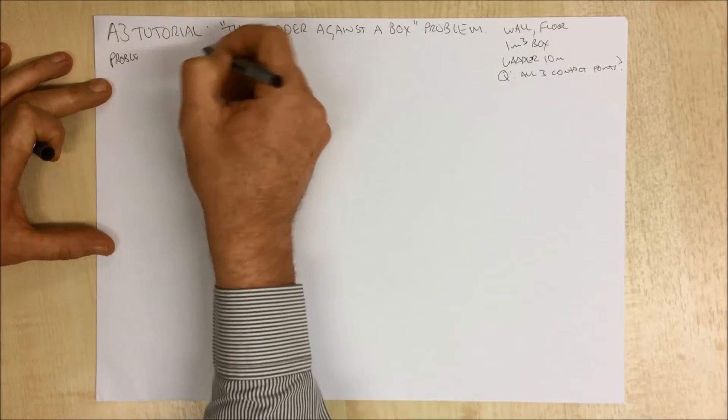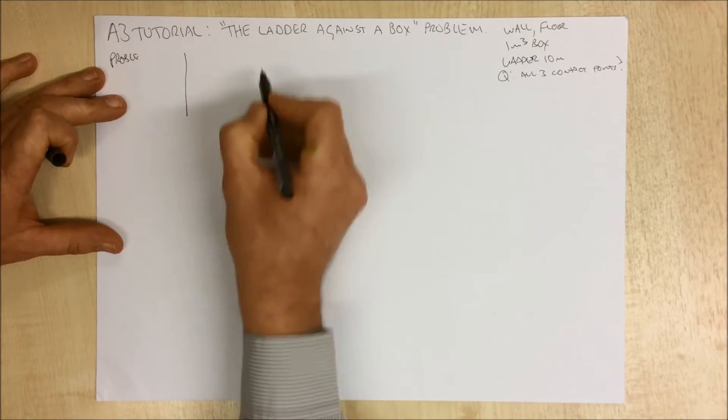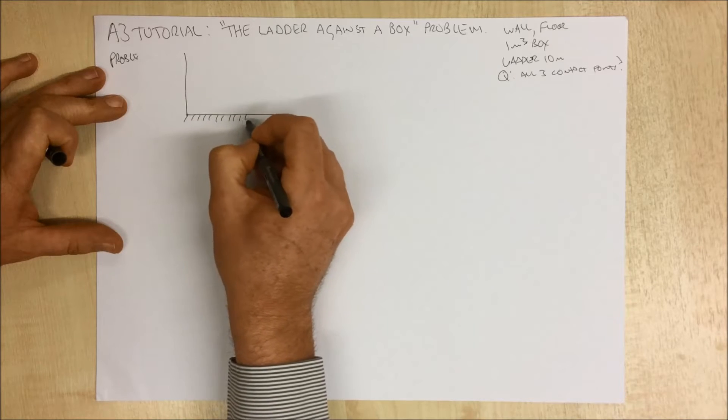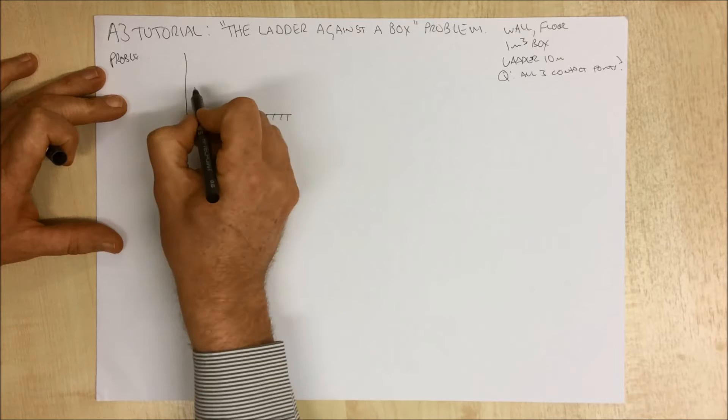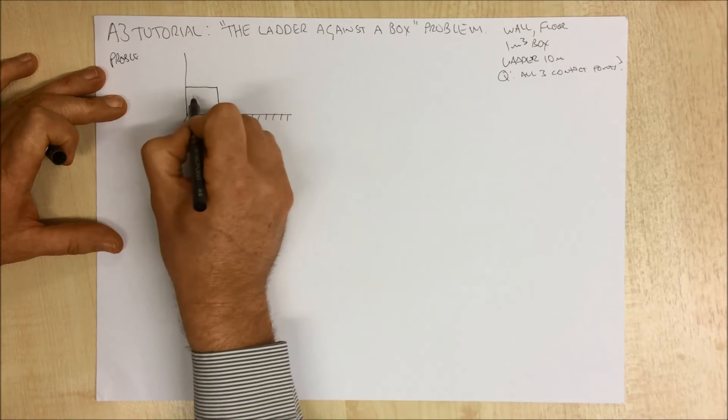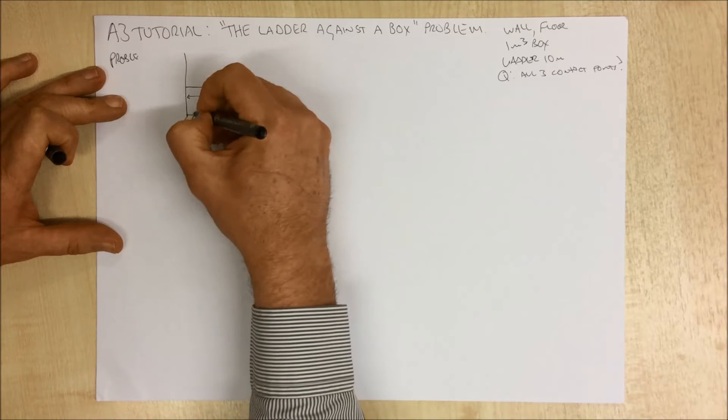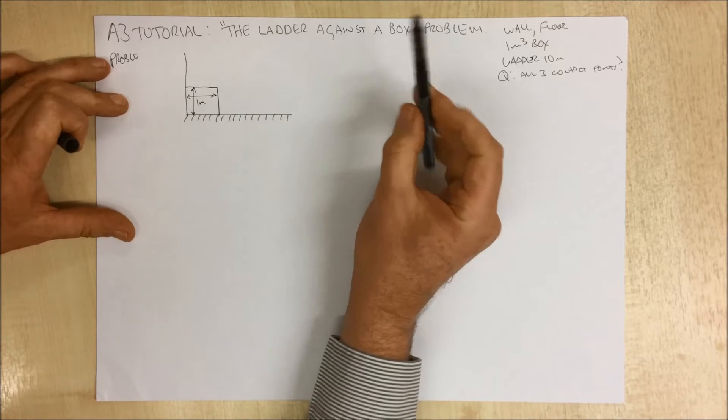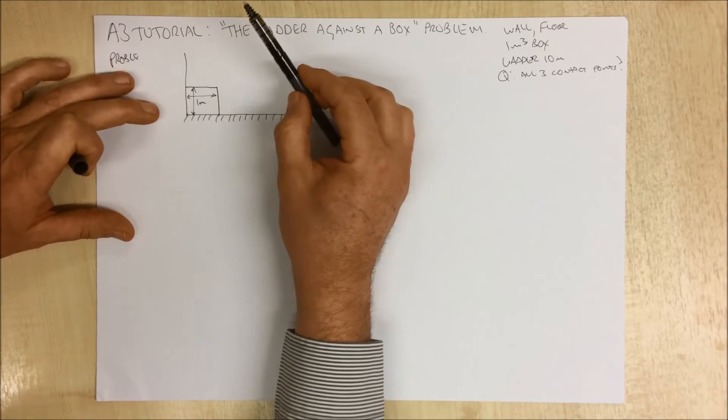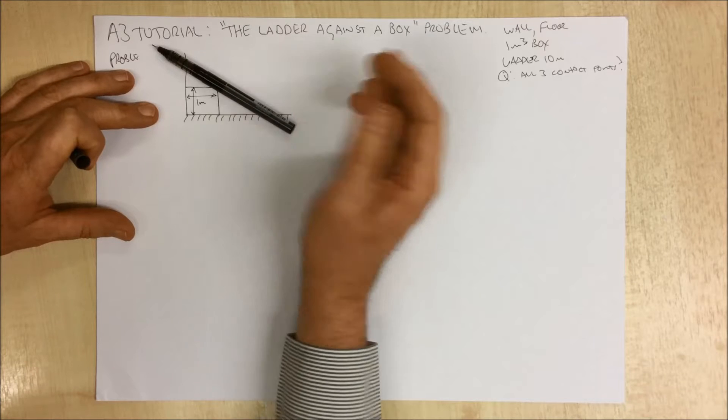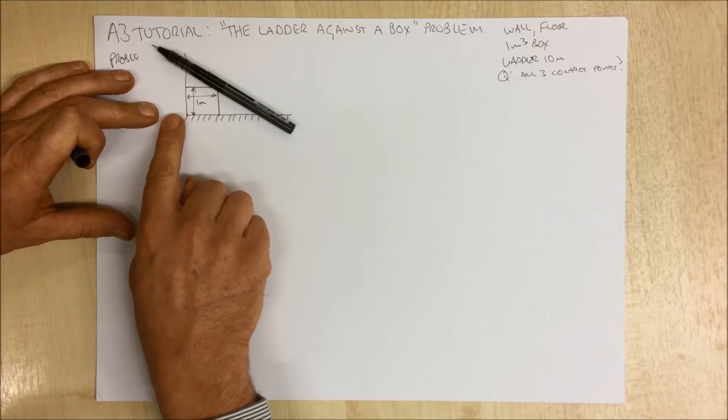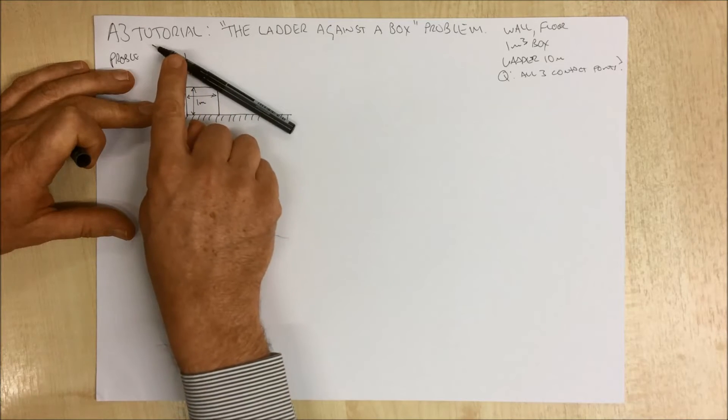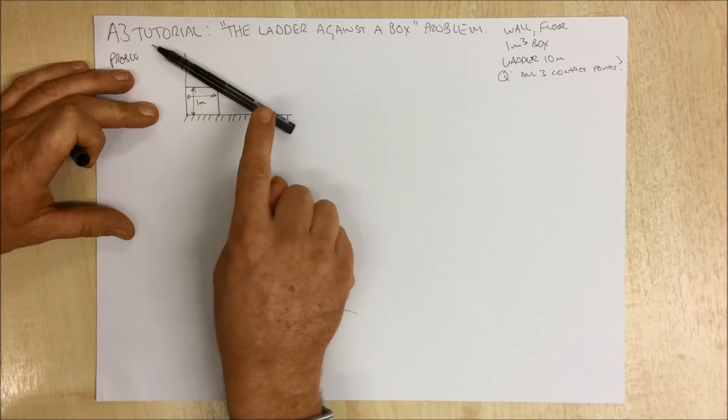So here's our problem. We have a wall and a floor like this and a box. The box has a dimension of one meter. If we've got a 10 meter long ladder, we put it against it here.